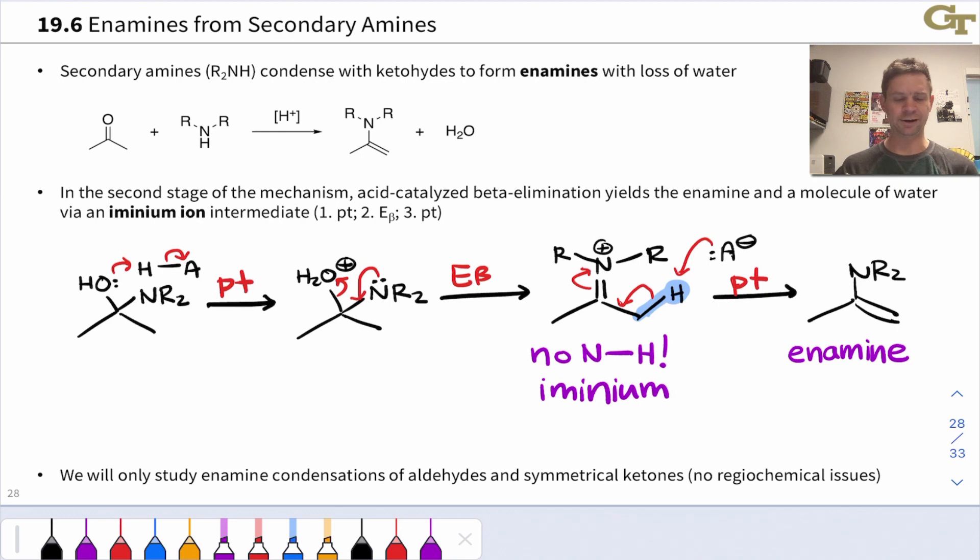One other thing that's worth noting about enamine condensations is that we can imagine a situation where the two alpha carbons are different, right? Say I had a different hydrogen on the left hand side than on the right hand side. The result could be two different constitutionally isomeric enamines. For example, one with a more substituted double bond and one with a less substituted double bond. And this immediately brings up the issue of site selectivity, which enamine is favored, which enamine forms under whatever conditions.